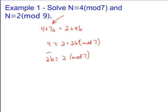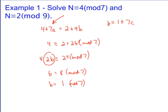We need this to be 1 mod 7. Well, to do that, we need to multiply both sides by 4. And so that's going to end up with b equals 8 mod 7, which means b equals 1 mod 7, which means b is equivalent to 1 plus 7c.